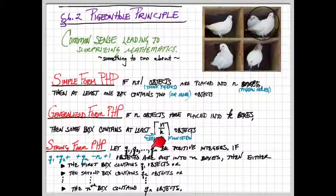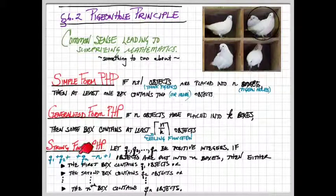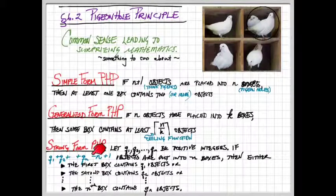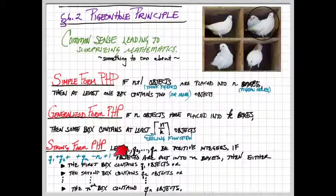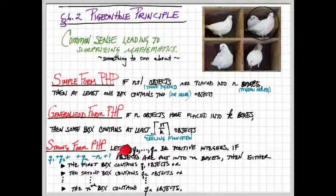In this case, we're going to have the sum of q1 through qn minus the number of boxes n plus 1 objects, pigeons. So this represents the number of pigeons we have. And they're being placed into n boxes.